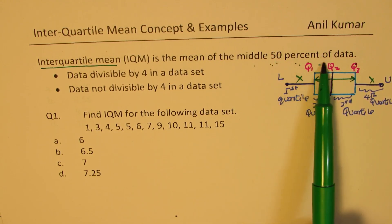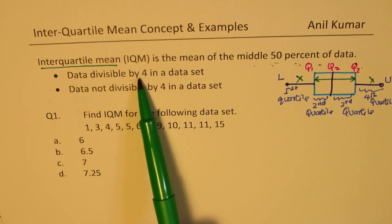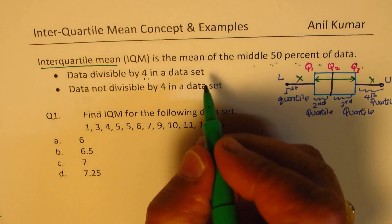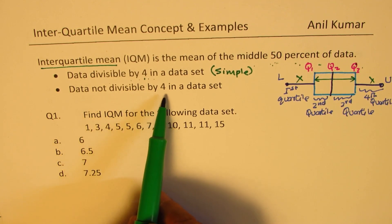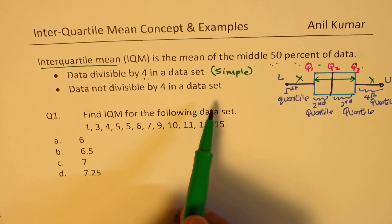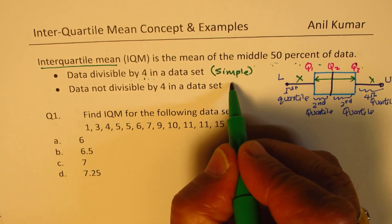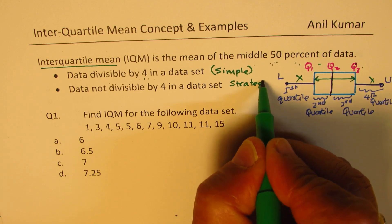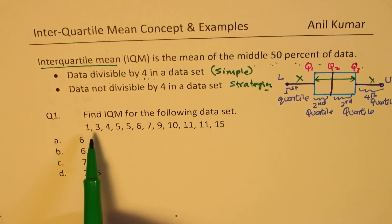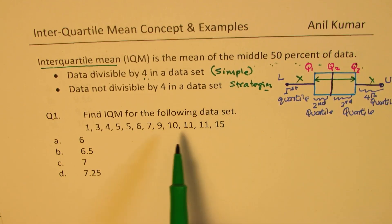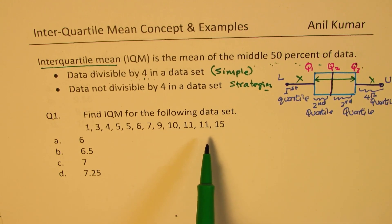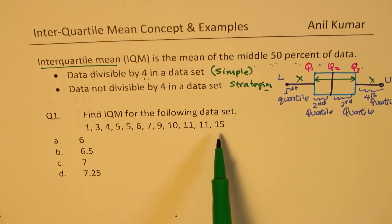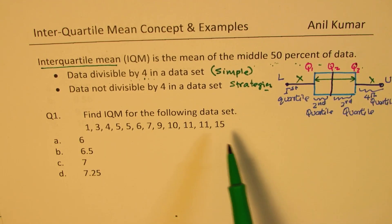When trying to find the mean of 50 percent of the data, if the data count is divisible by four then it's simple. However, if the data set is not divisible by four, we have to involve some strategies. In Example 1 we'll take a simple case where the number of data points is a multiple of four, and in the other examples we'll see what happens when we have 9, 11, or 15 observations.